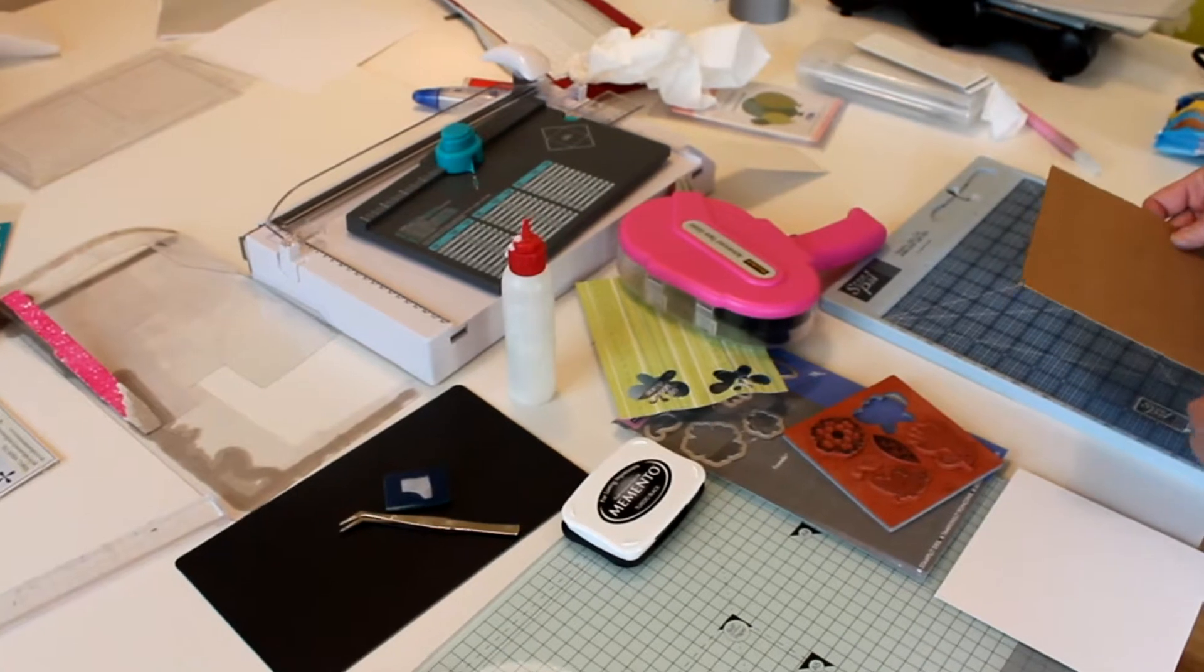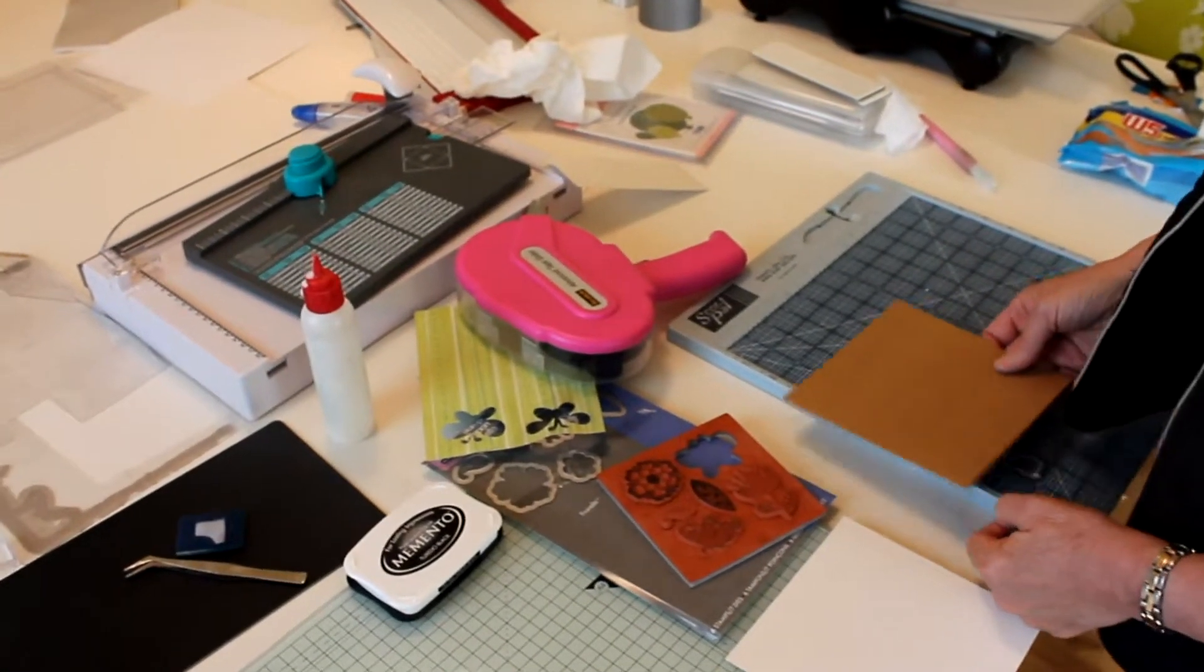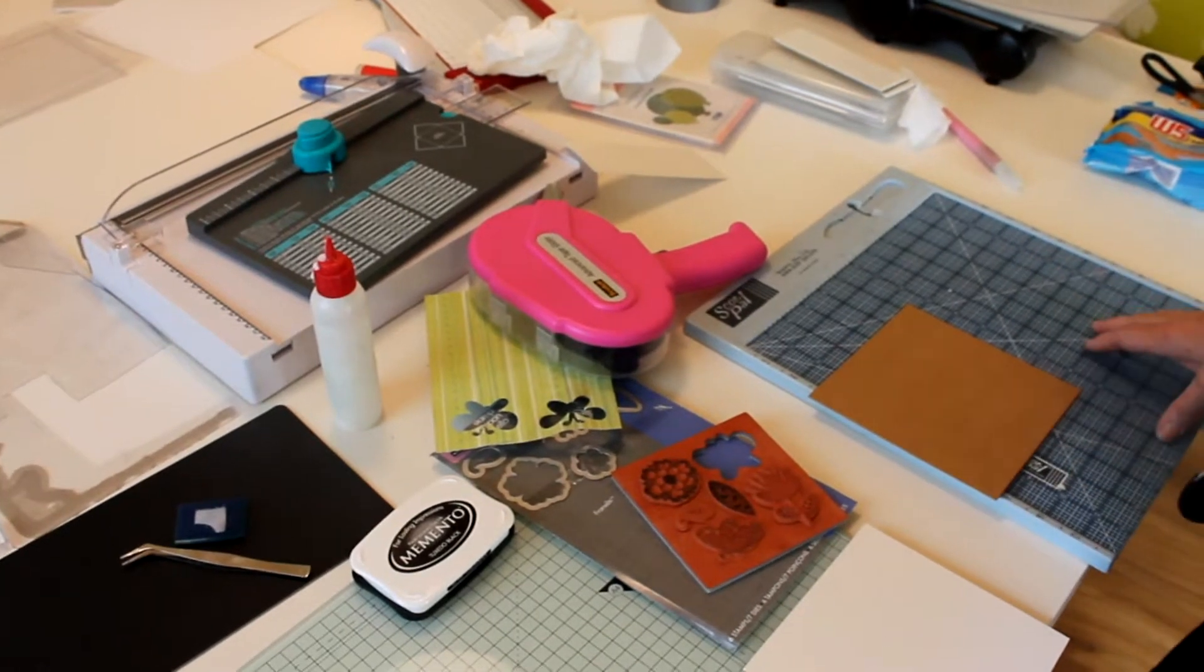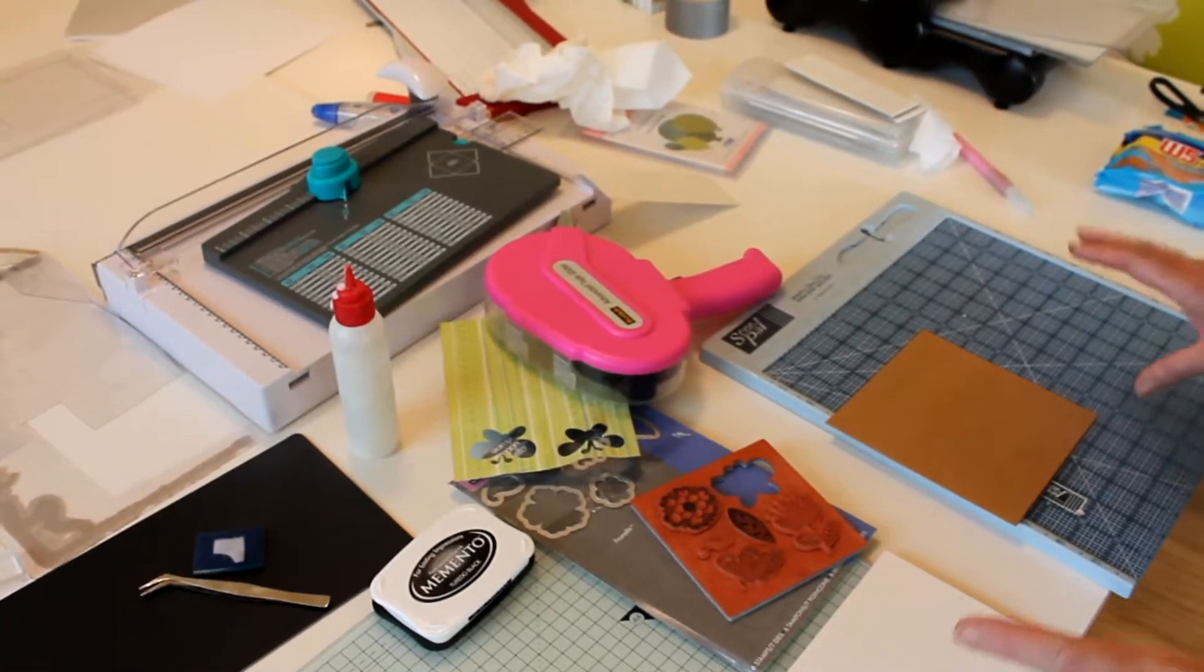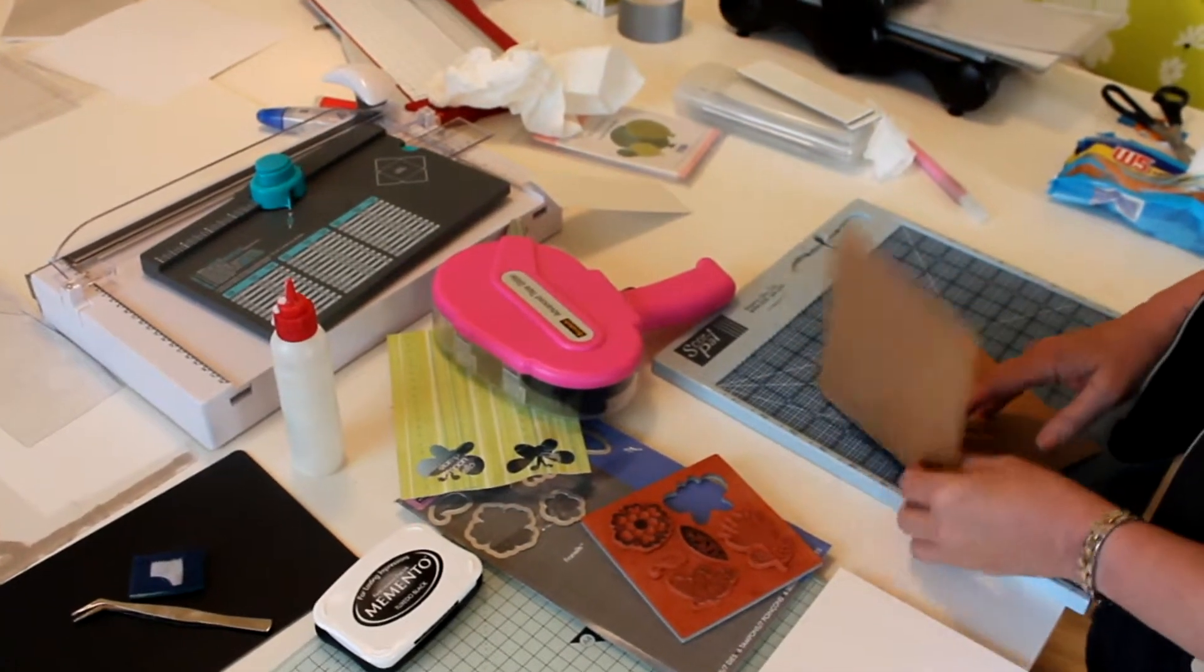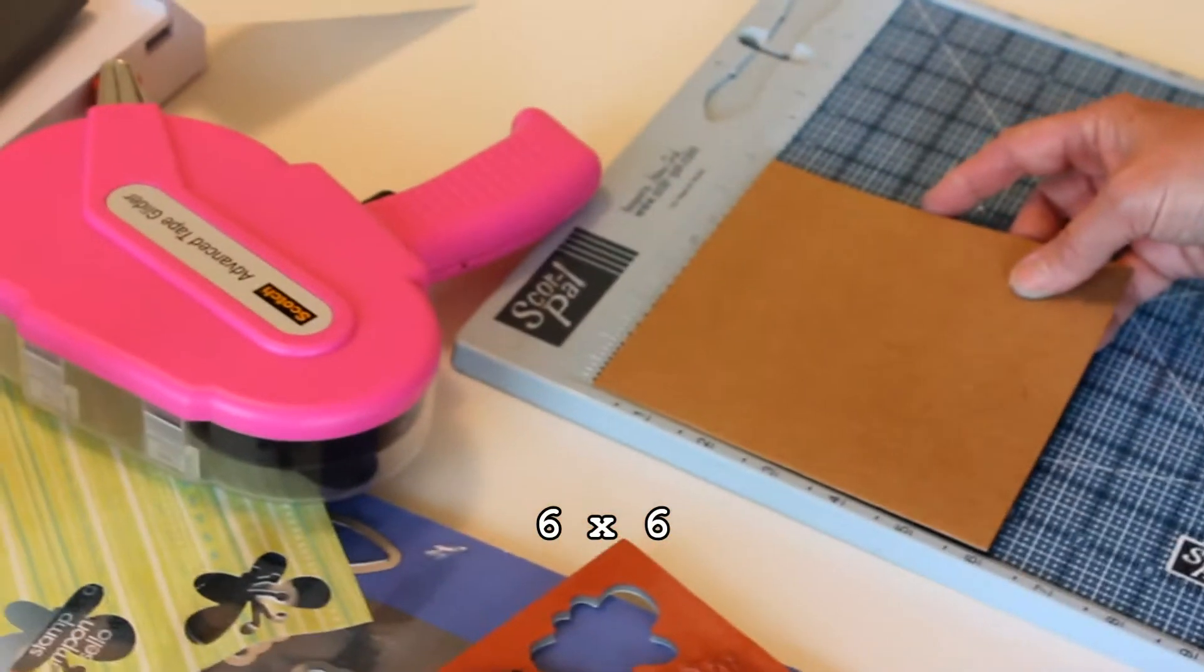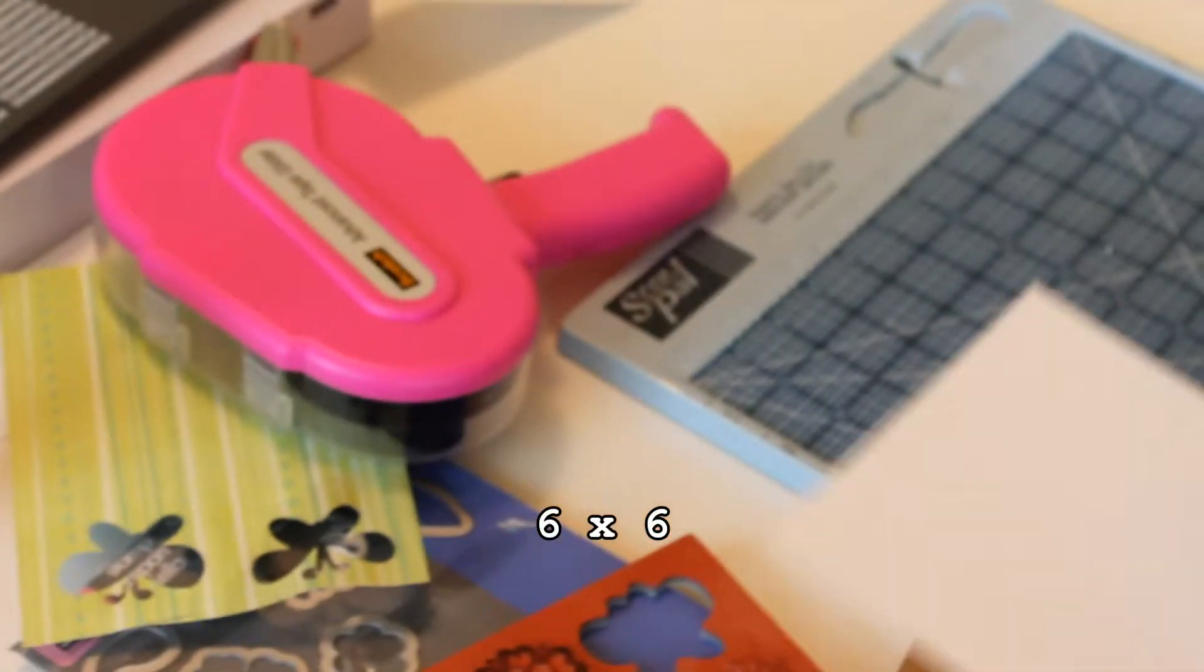Hi guys, it's Sylvie the Irish Scrapper back with another quick tutorial. Sometimes we need to make a card in a hurry, so this is my effort of making a card in a hurry. I'm starting with a pre-bought card blank which measures six by six, and I'm going to simply match it with a piece of white card that I cut at five and three quarters by five and three quarters.